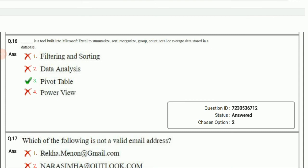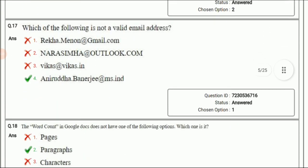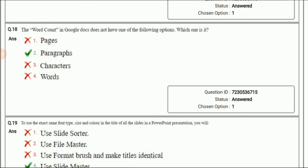These questions are from computer literacy. Dash is a tool built into Microsoft Excel to summarize, sort, reorganize, group, count, total or average data stored in a database. The answer is pivot table. These questions are from very general computer knowledge, so most of you will be able to do these. Which of the following is not a valid email address? All three options are correct. The last option, anirudha.benerji at the rate ms.ind, is not a valid email address. Next question: The word count in Google Docs does not have one of the following options. Which one is it? The answer is paragraphs.